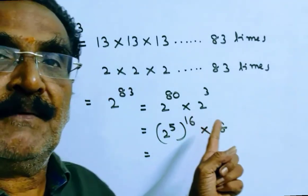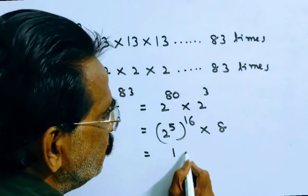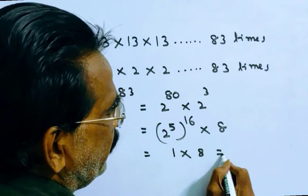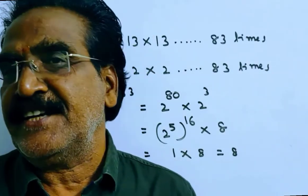Minus 1 whole power 16 is equal to plus 1. 1 into 8, that is equal to 8. So 8 is the remainder, friends. Thank you.